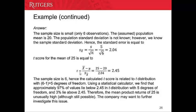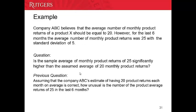Because the sample size is 6, the degrees of freedom equal 5. Based on the statistical calculator, we find that about 97% of the values lie below 2.45 in the t-distribution with 5 degrees of freedom, and 3% lies above 2.45. Now let's look at the current question: is the sample average of 25 monthly product returns significantly higher than the assumed population average of 20? In other words, we try to see whether the sample mean equals the population mean.